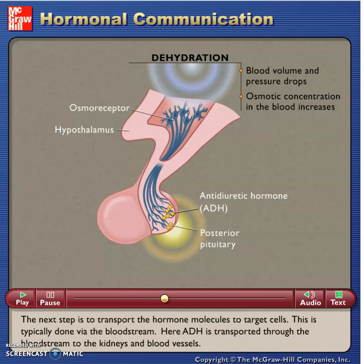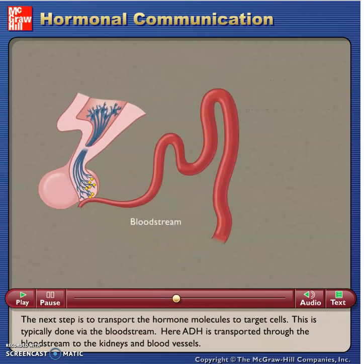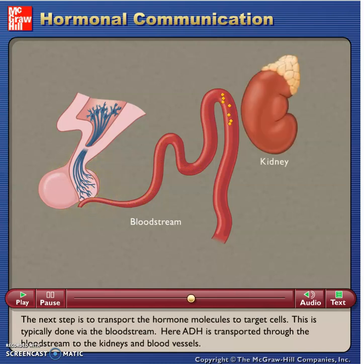The next step is to transport the hormone molecules to target cells. This is typically done via the bloodstream. Here, ADH is transported through the bloodstream to the kidneys and blood vessels.